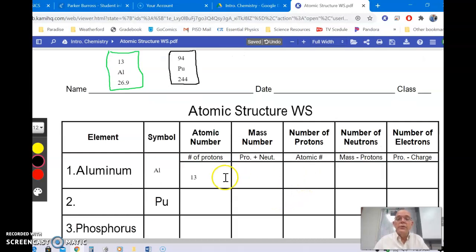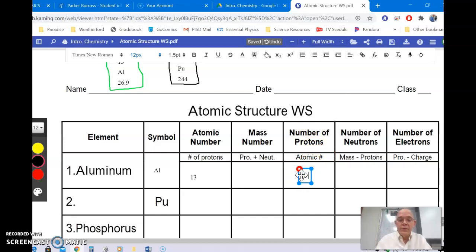However, that number is also, you notice, the number of protons. The atomic number, number of protons, the atomic number are the same. So over here, we're going to put 13, but now we're talking about 13 protons, so we're going to put P and a plus to show that it's a positive. P positive is the symbol for protons.